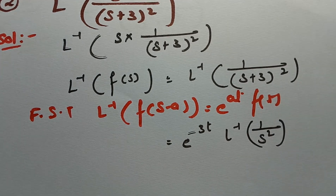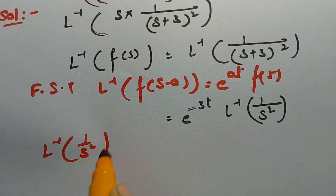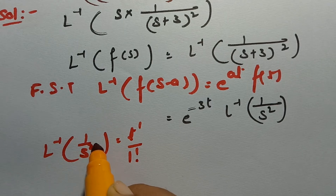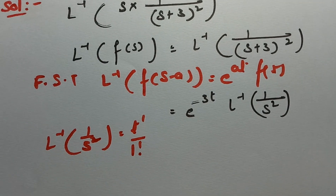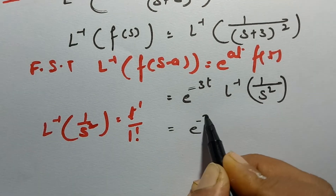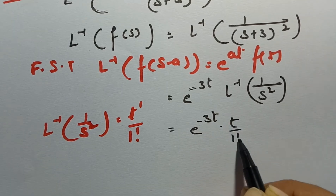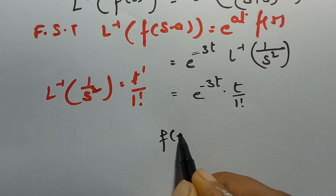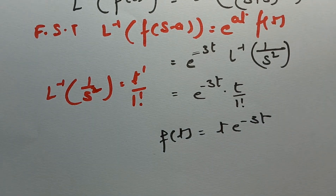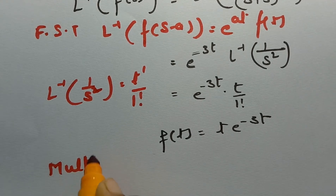The inverse Laplace transform of 1/s² is t^1/1! = t. Using the formula: inverse Laplace transform of 1/s^(n+1) = t^n/n!, so the answer is e^(−3t)·t. Therefore f(t) = t·e^(−3t). Now we apply the multiplication theorem.